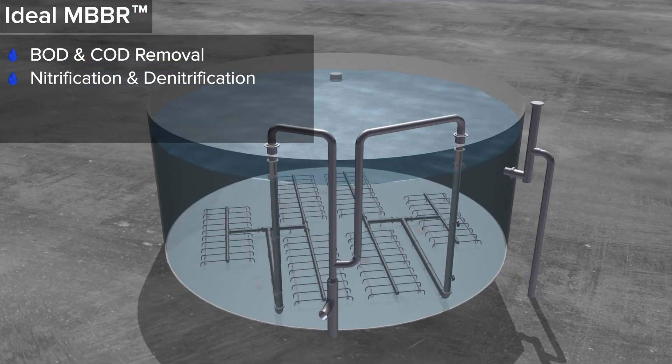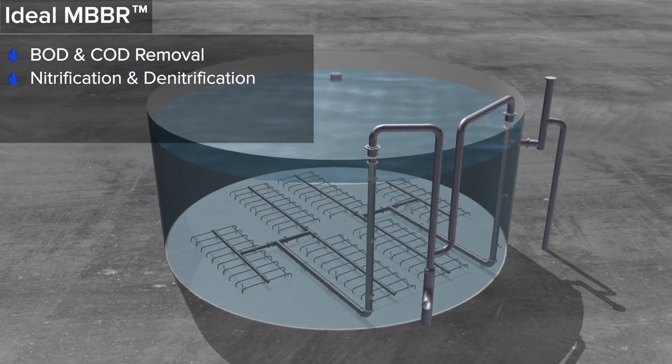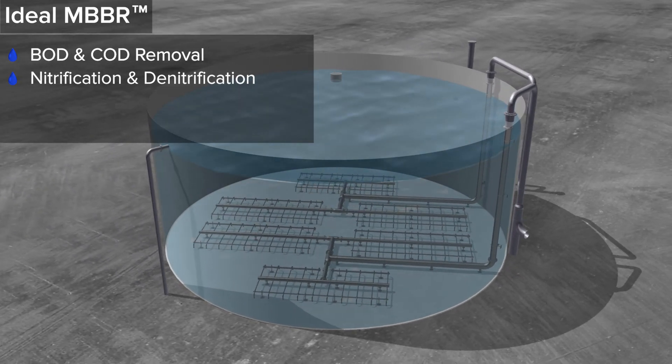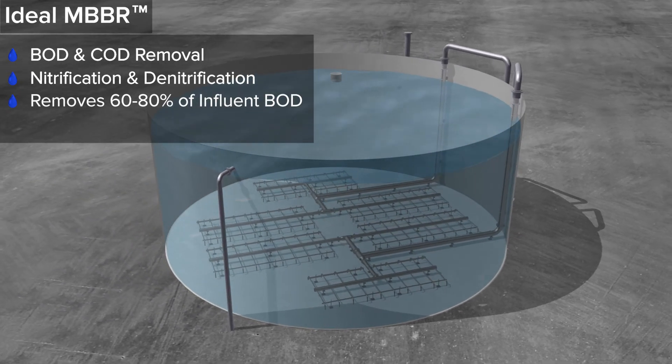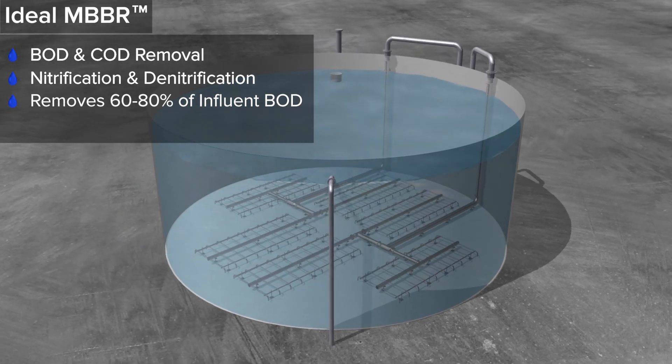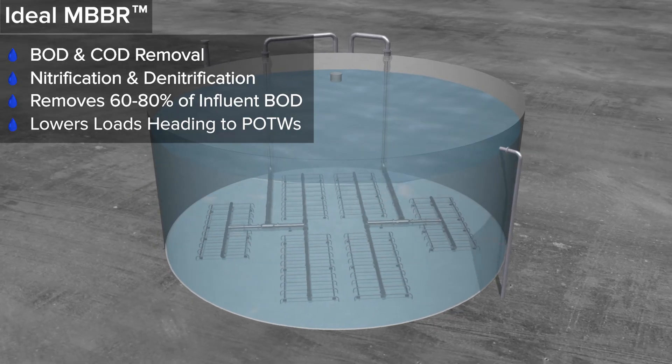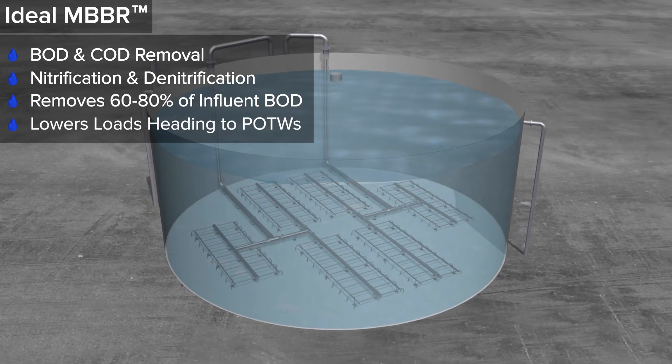One concept of applying the Moving Bed Biofilm Reactor or MBBR process is for industrial pretreatment, which shaves off 60-80% of the influent BOD, all while lowering the loads heading to publicly owned treatment works, or POTWs.